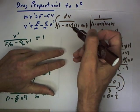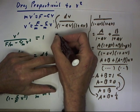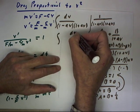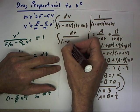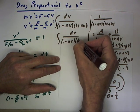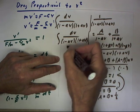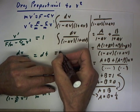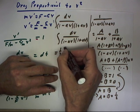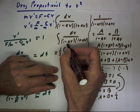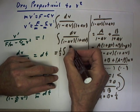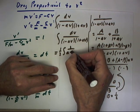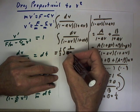So now the integral of dv over 1 minus av times 1 plus av is 1 half times the integral of 1 over A minus—sorry, that should be 1.